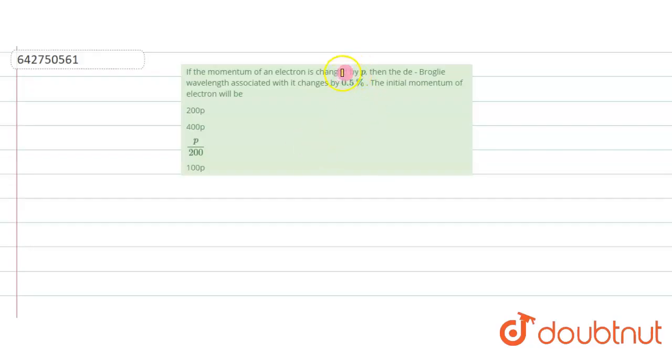Hello students, let's start the question. The question says, if the momentum of an electron changed by P and the de Broglie wavelength associated with it changed by 0.5%, then the initial momentum of the electron will be. There are options, so you have to calculate what is the initial momentum of the electron.